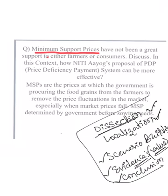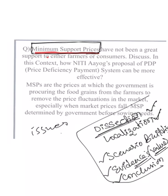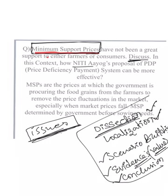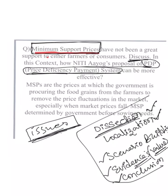Now, the dissection: Minimum Support Prices have not been a great support to either farmers or consumers — this means MSP has issues or challenges, so we have to discuss them. That's the directive keyword. Next, in this context, the NITI Aayog proposal of PDP — Price Deficiency Payment System — is another directive word, meaning we have to write about how PDP overcomes the problems of MSP.